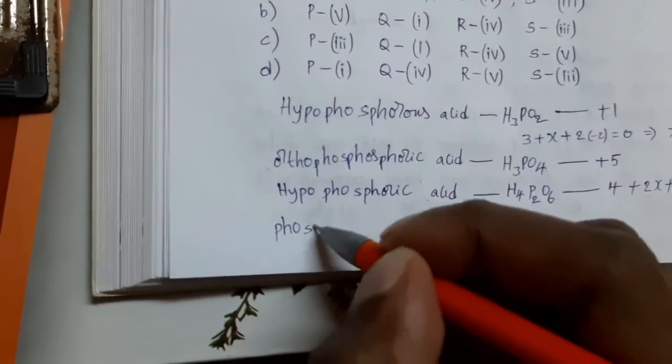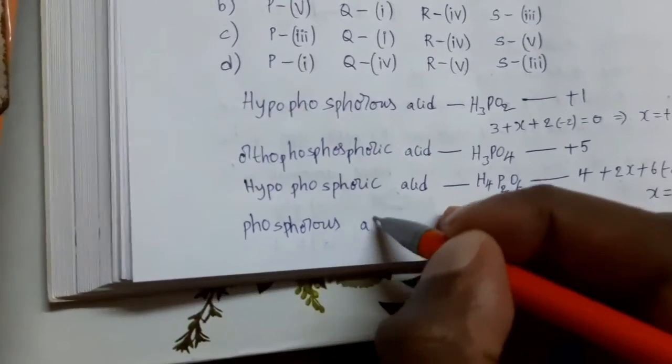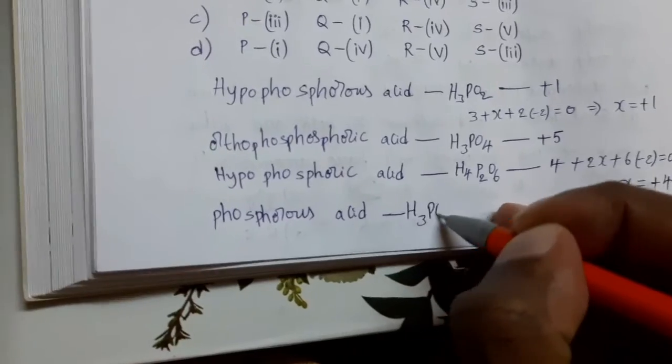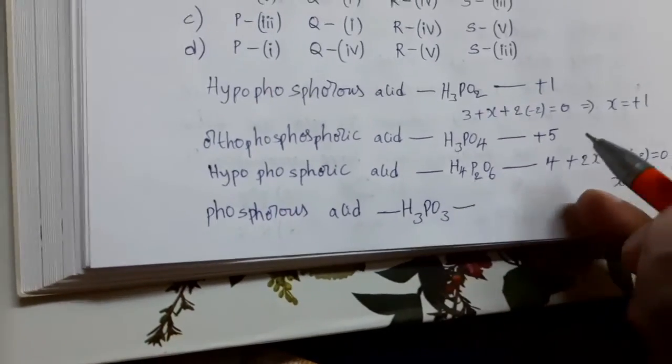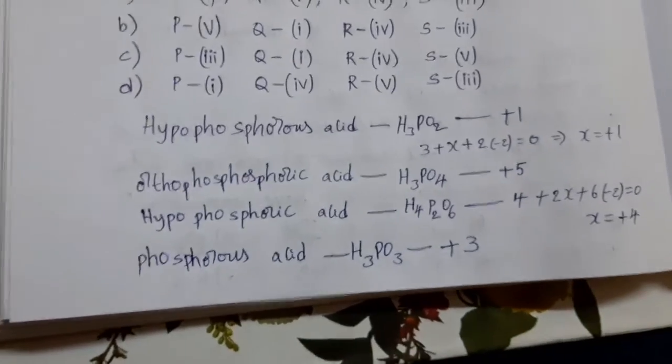Next, phosphorous acid. What is the formula? H3PO3. Phosphorous acid, for this oxidation state plus 3.